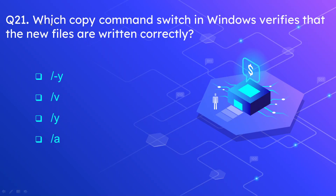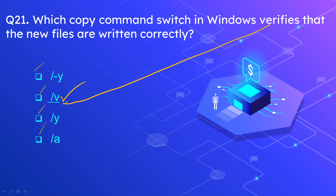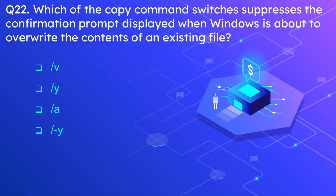Question 21: Which copy command switch in Windows verifies that new files are written correctly? The options are /-, /v, /y, and /a. The correct answer is /v — for verification, use the /v switch. Question 22: Which copy command switch suppresses the confirmation prompt displayed when Windows is about to override the content of an existing file? The options are /v, /y, /a, and /-y. The correct answer is /y.